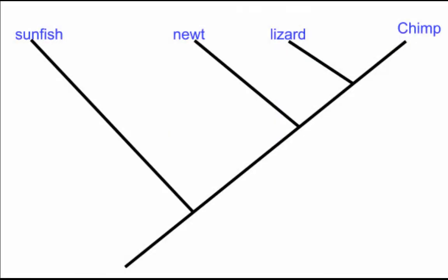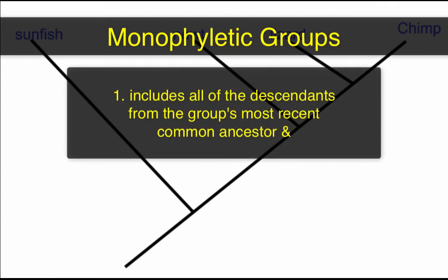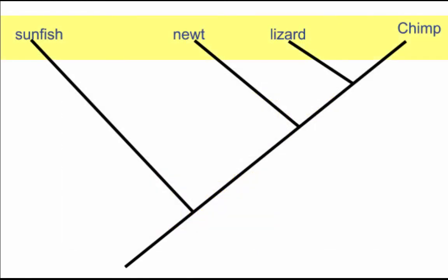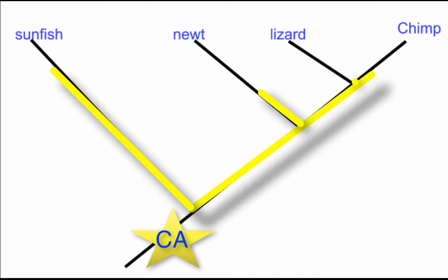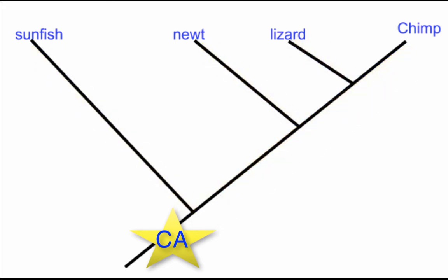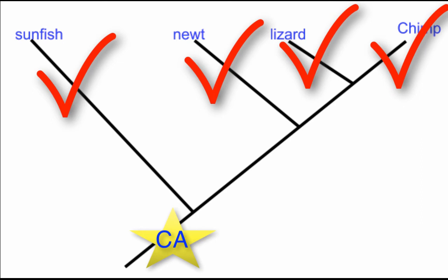That brings us to the idea of what we call a monophyletic group. A monophyletic group includes a common ancestor and all the descendants of that common ancestor. If you leave off any of the descendants, then you no longer can say it's a monophyletic group. All of the organisms on this cladogram are monophyletic — I look at the most recent common ancestor between all four, then trace the tree to see if I left off any descendants. The common ancestor here has descendants: sunfish, newt, lizard, and chimp — so those four are monophyletic.